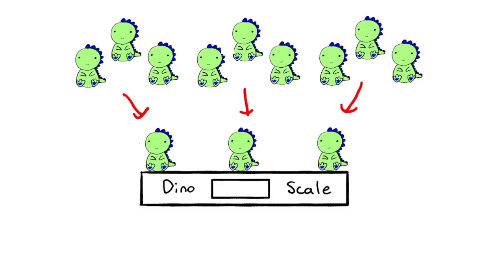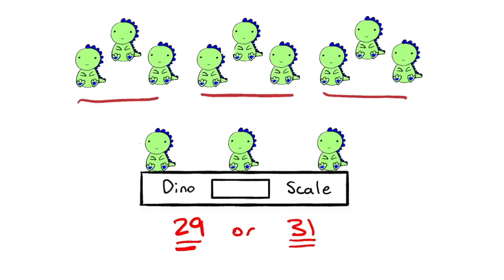After weighing these dinosaurs, the total weight will either be 29 kilograms or 31 kilograms, because two of them will weigh 10 as normal dinosaurs and one will weigh either 9 or 11 as the fake dinosaur. But this doesn't help us too much. It tells us whether the fake dinosaur is lighter or heavier, but we're not able to determine which family contains that fake dinosaur.